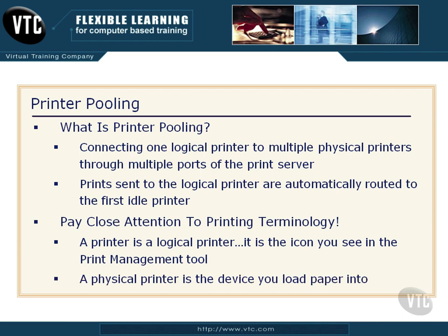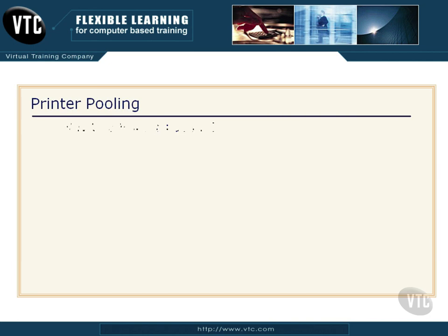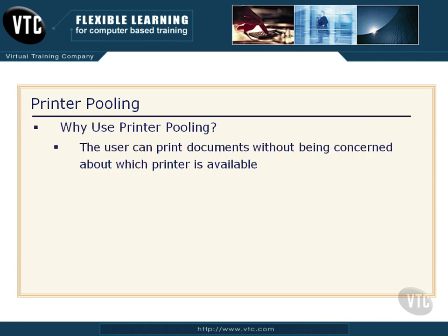A physical printer is that device you actually load paper into and get prints out of — it's what we plug into the wall, power up, and so on. Why do we want to use printer pooling? The user can print documents without being concerned about which printer is available.